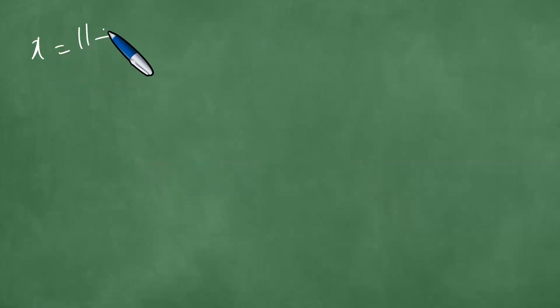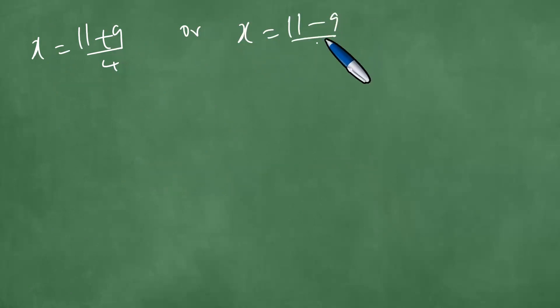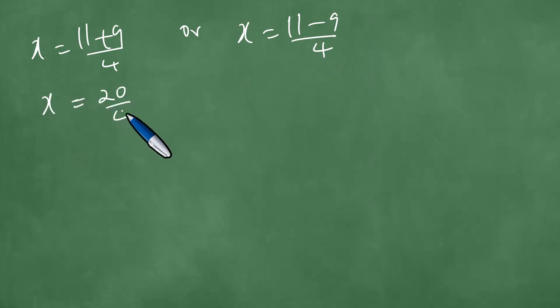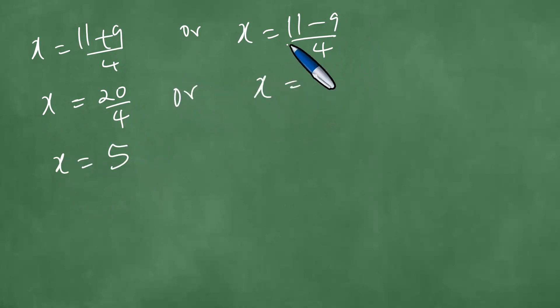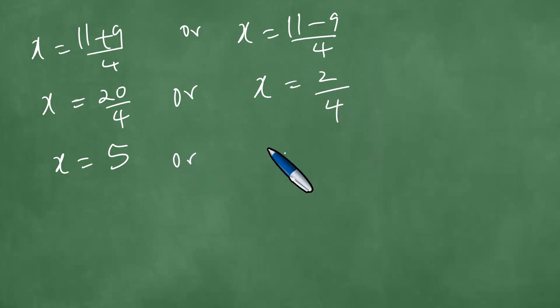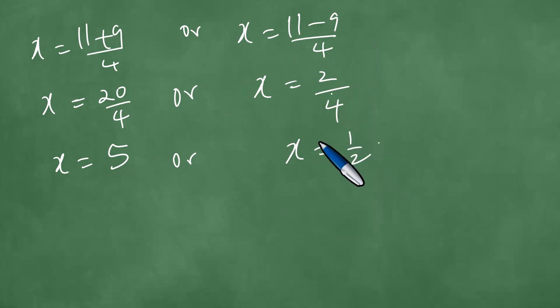So x equals 11 plus 9 over 4, or x equals 11 minus 9 over 4. If x equals 11 plus 9 over 4, then 11 plus 9 is 20, and 20 divided by 4 is 5. And 11 minus 9 is 2, and 2 over 4 simplifies — dividing both by 2 — to give 1 over 2. So the solutions are x equals 5 or x equals one half.